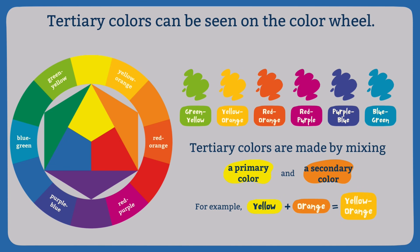Tertiary colors can be seen on the color wheel: red-purple, red-orange, yellow-orange, yellow-green, blue-green, and purple-blue. Tertiary colors are made by mixing a primary color and a secondary color. For example, yellow plus orange makes yellow-orange.